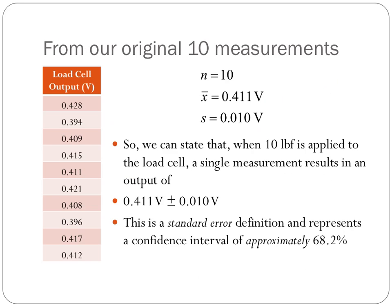Returning to our original load cell example, we can take the 10 measurements acquired when we applied 10 pounds of force and estimate both the mean and the standard deviation of the population. Based on this, we can state that when 10 pounds force is applied to this load cell, a single measurement will result in an output of 0.411 volts with an uncertainty of 0.01 volts, which is our standard deviation. This represents a confidence interval between one standard deviation below the mean and one standard deviation above the mean, which corresponds to about 68.2% of the time.